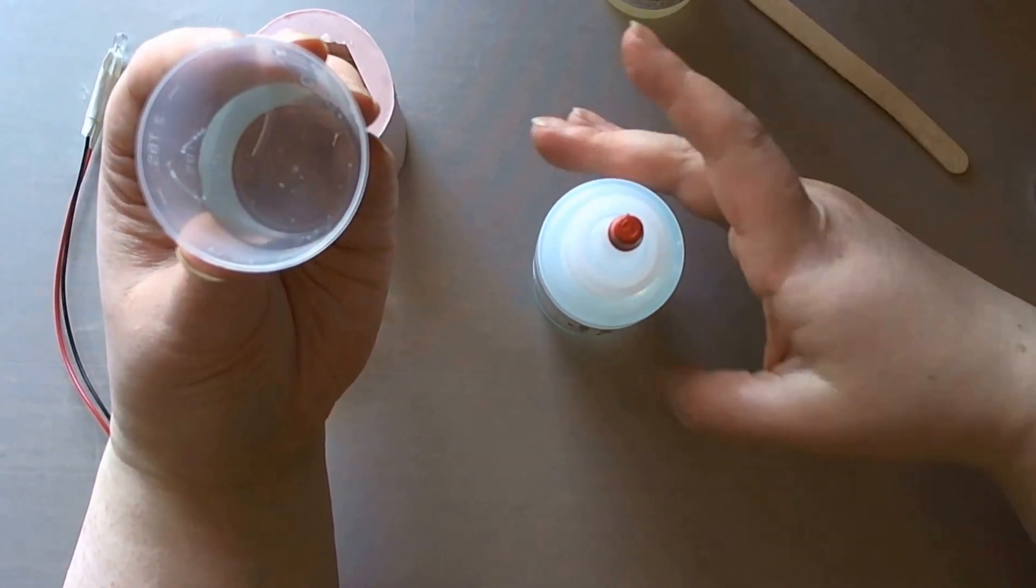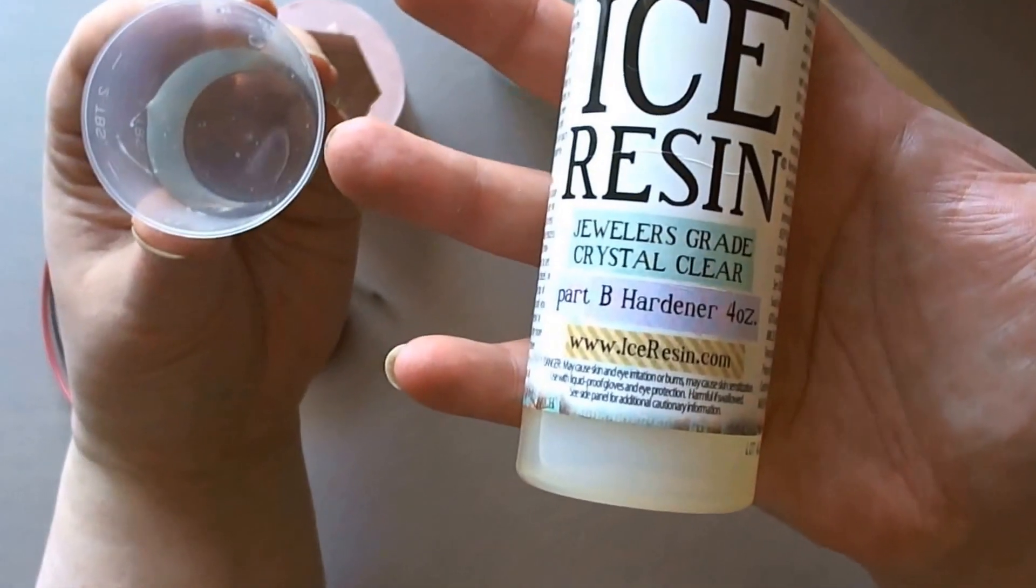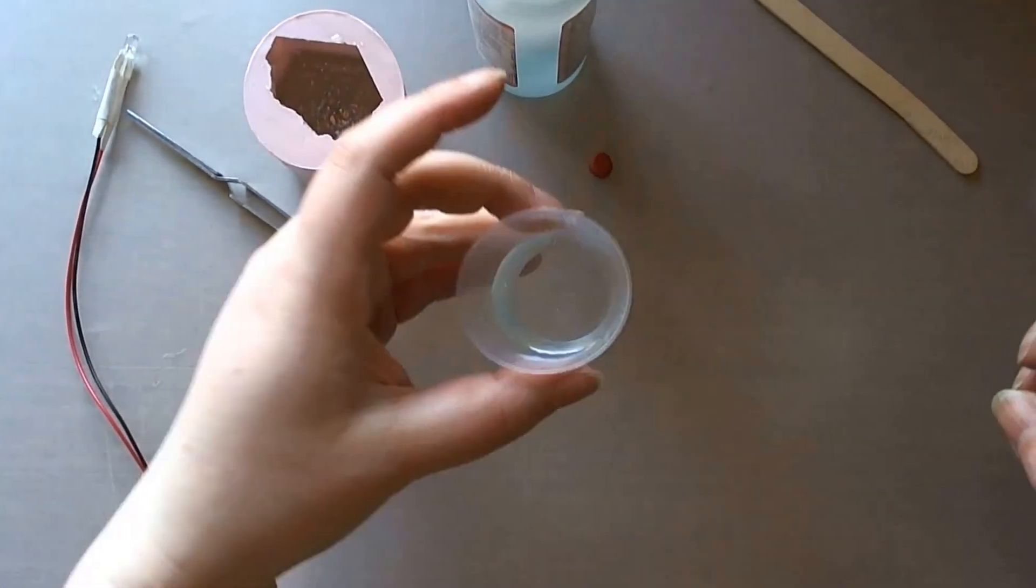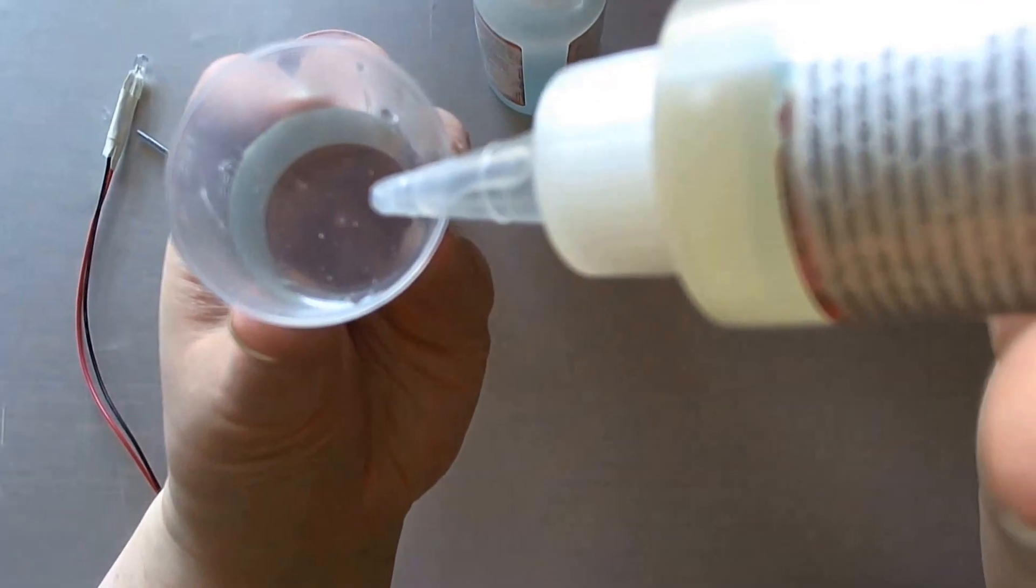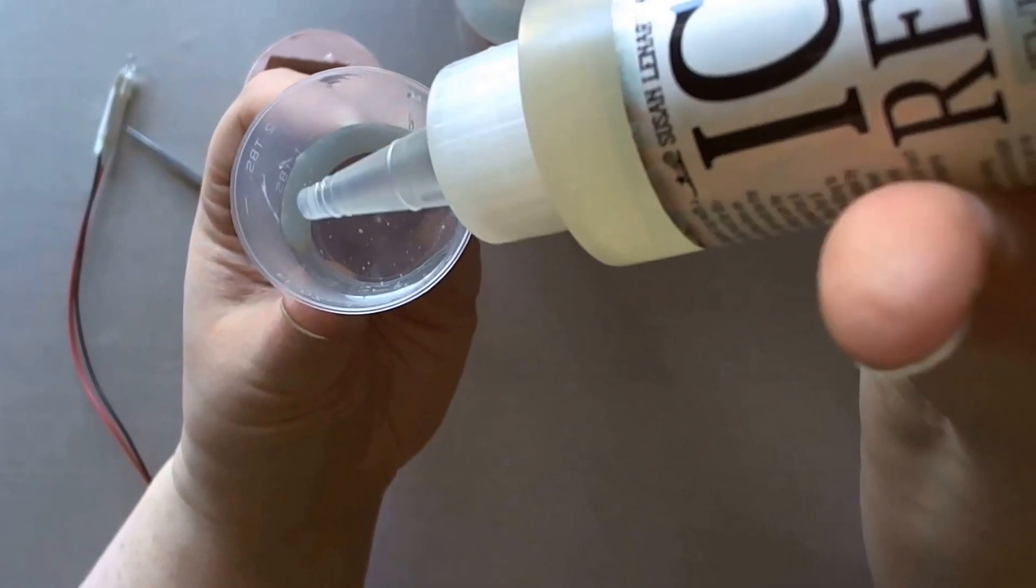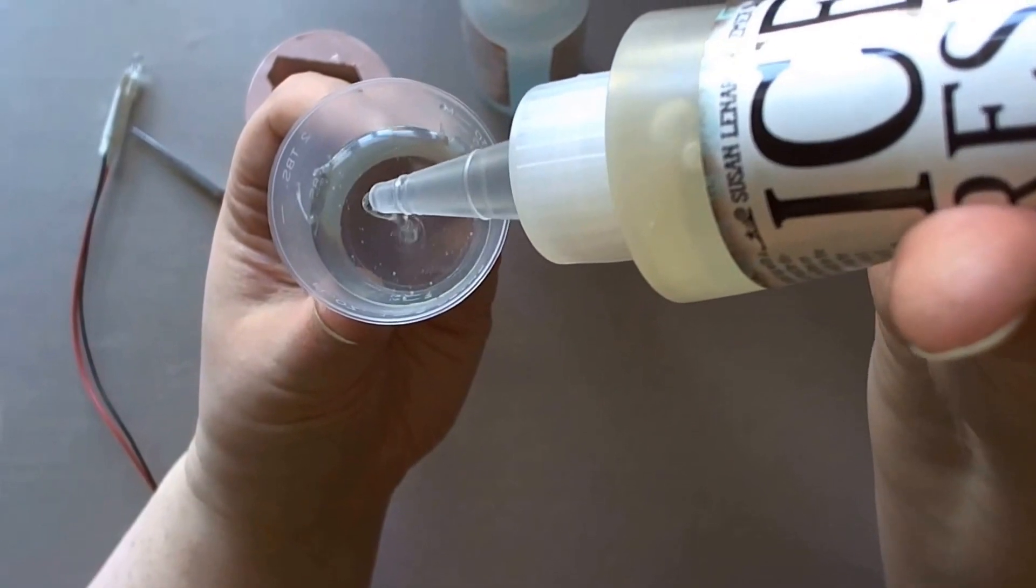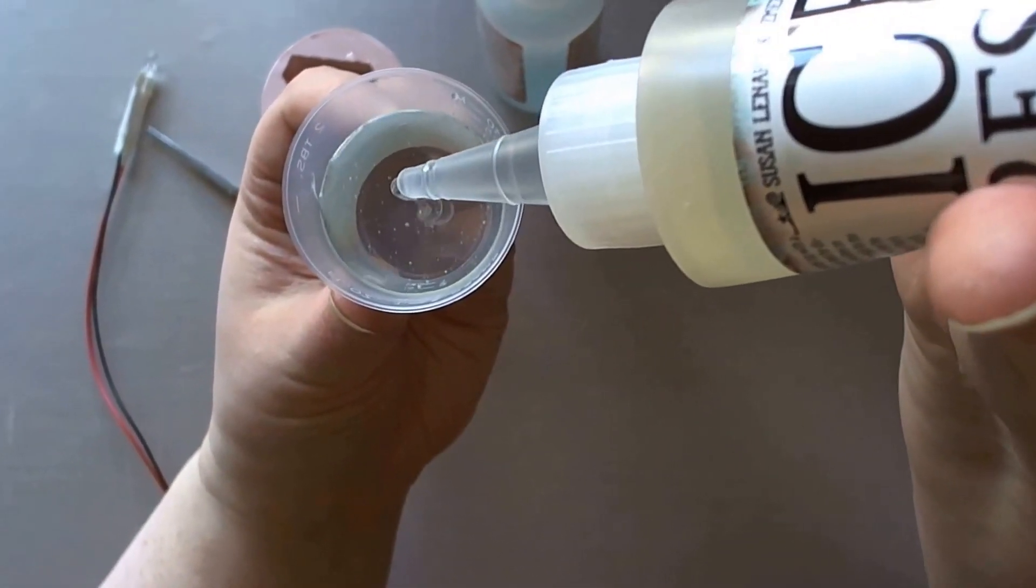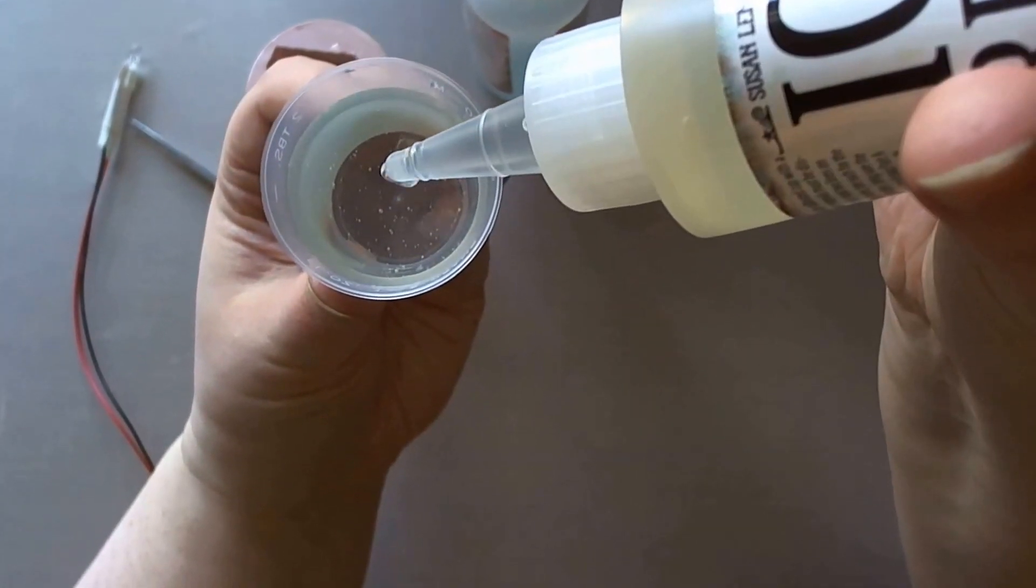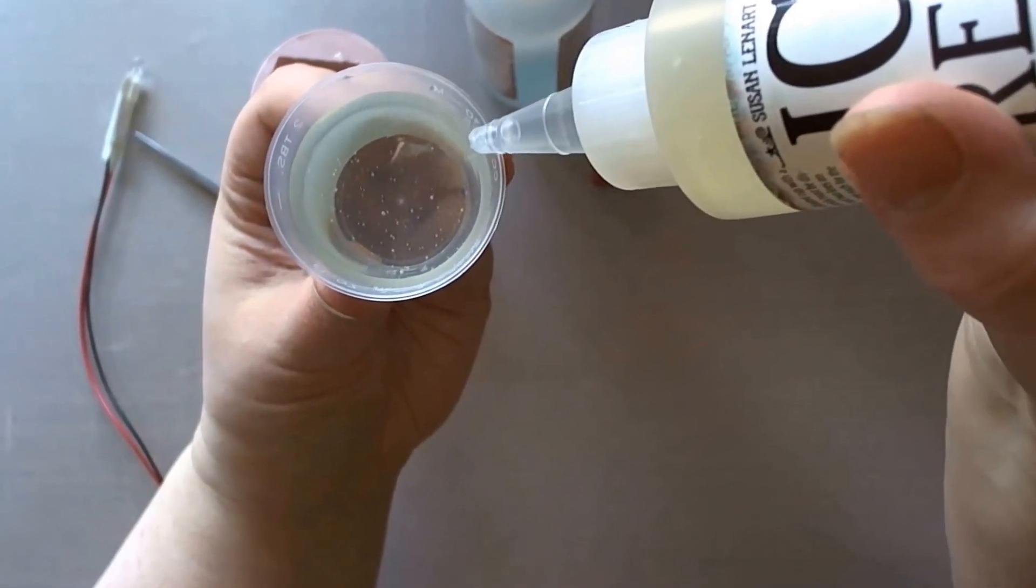To mix ice resin you always start with A and then go on to B. It is equal parts, 1 to 1 ratio. So now I need to top this up exactly to the 6 dram line. This one comes out much quicker than part A, so just remember that when you're putting it in and giving it a good squeeze. You do need to be exact with your mixing. I think I'm pretty much there.